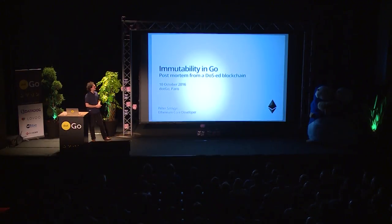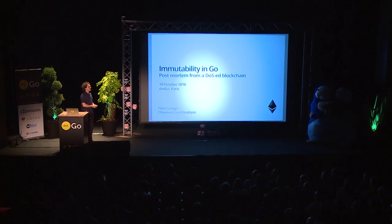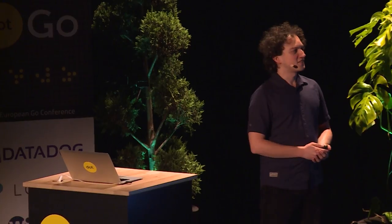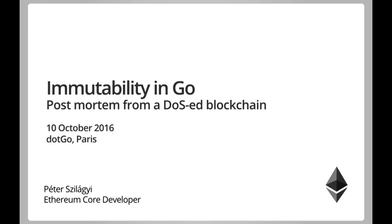Hello everybody. A couple of months ago, when I was trying to figure out what to present at .go, I figured that I would talk about various little quirks of the language that we at Ethereum grew to enjoy and like. Mutability was one of them. But over the last three weeks, we had constant attacks on our blockchain, so I reprioritized and realized that immutability is more important, so I will focus on immutability only.